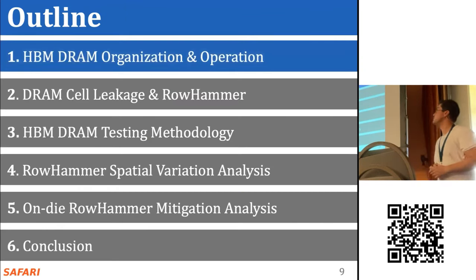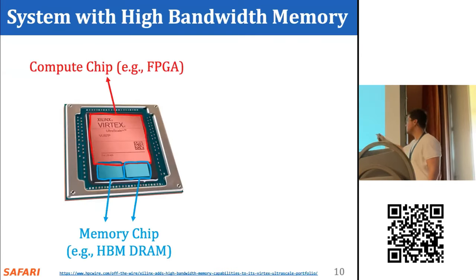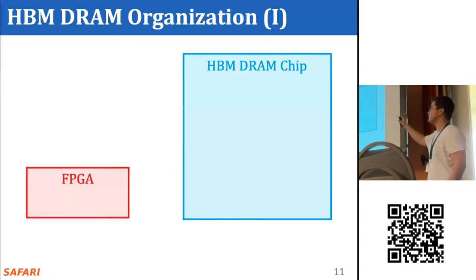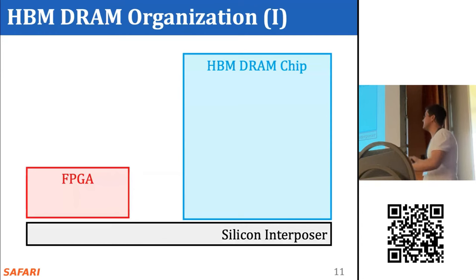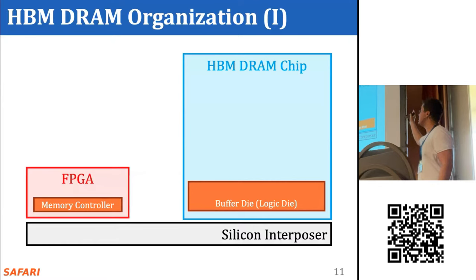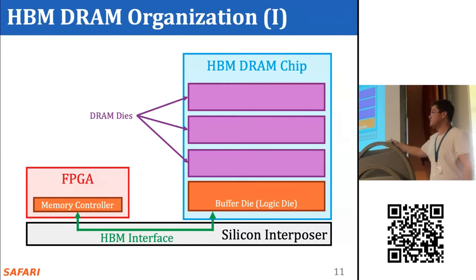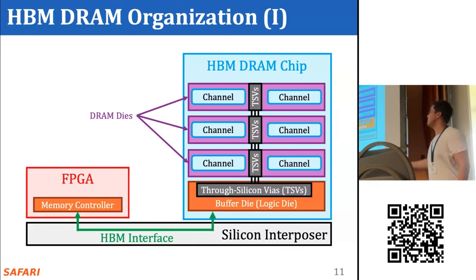Here is the outline of my talk. I'll continue by introducing HBM DRAM organization. A typical HBM2 system consists of a compute chip and multiple HBM DRAM chips integrated into the same package. The FPGA and HBM DRAM chip are placed on the same package connected by a silicon interposer. The memory controller in the FPGA communicates with the buffer die in the HBM chip over an HBM interface.